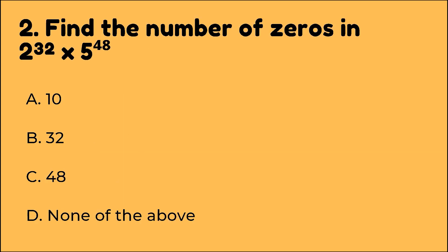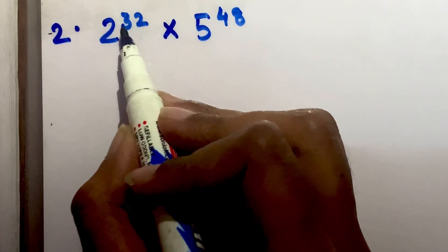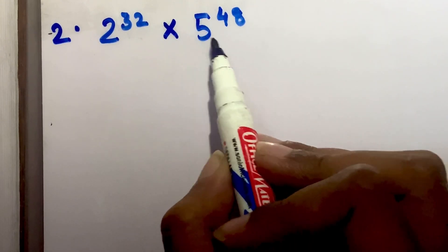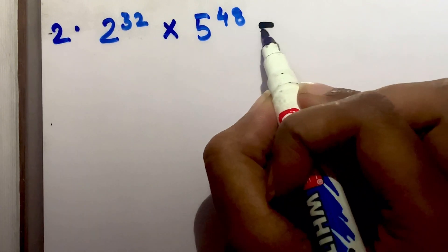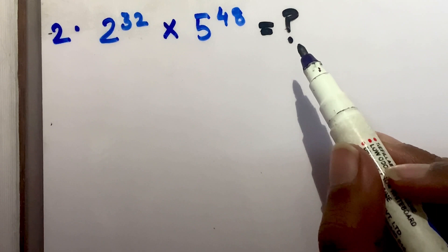Next question. Find the number of zeros in 2 raised to 32 multiplied by 5 raised to 48. The question is how many zeros? 2 raised to some big number power multiplied by 5 raised to some big power. In the final answer, how many zeros?